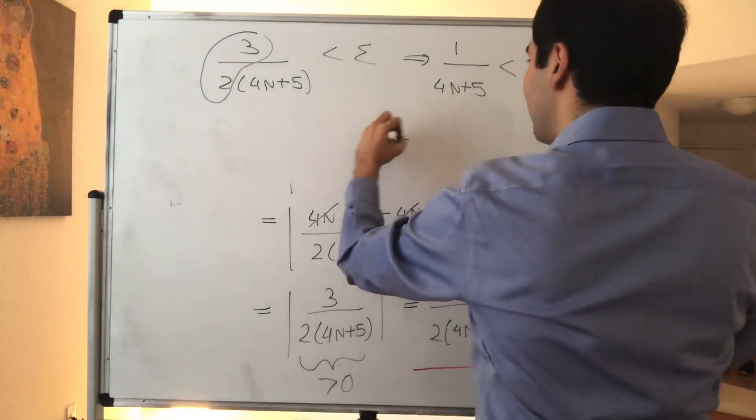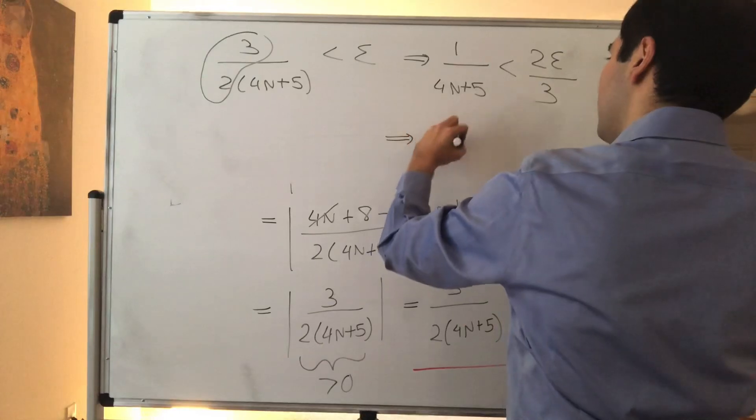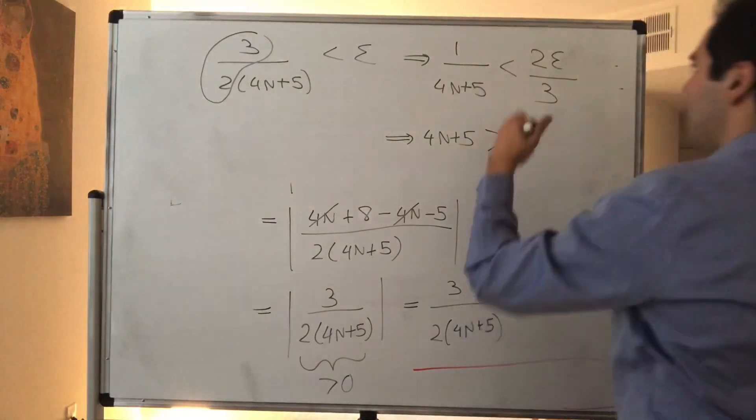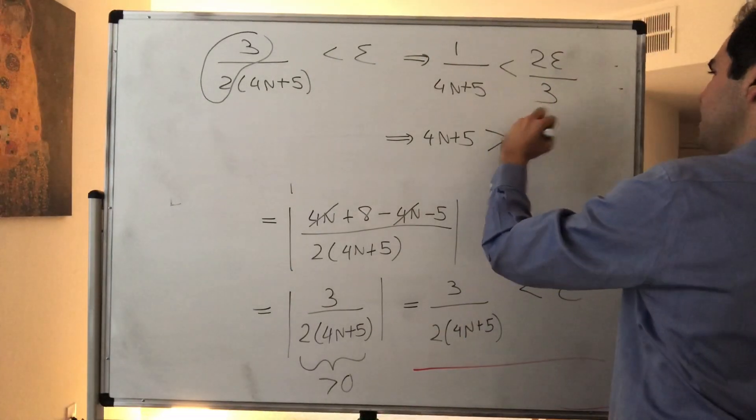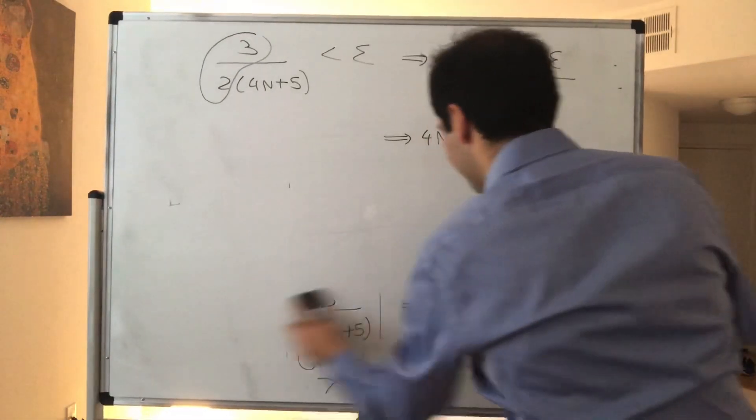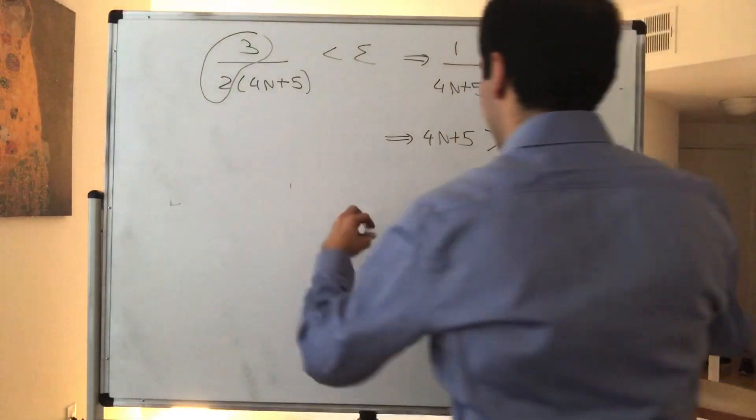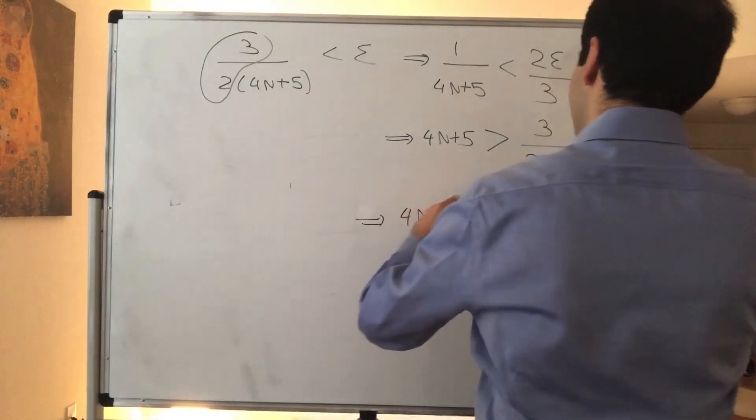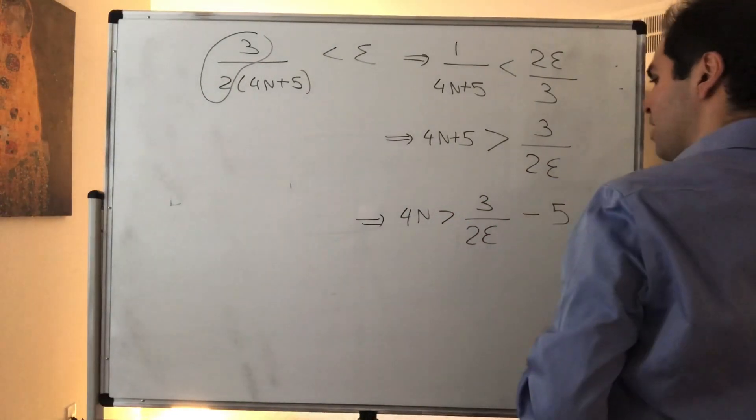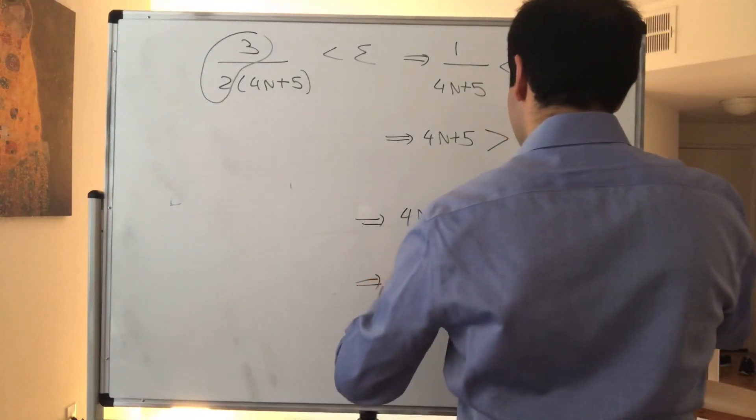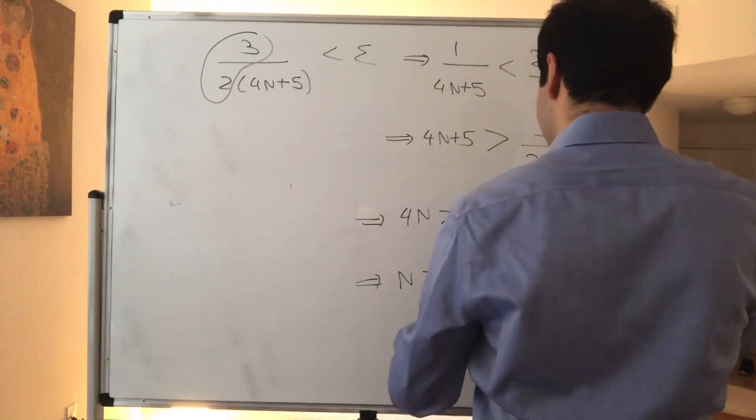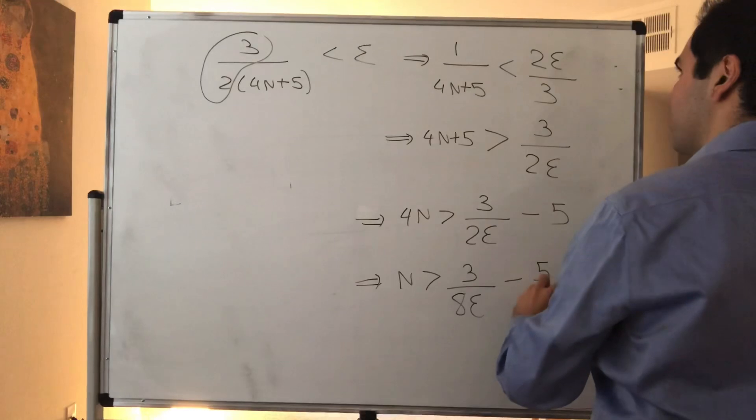And then, you take reciprocals. And remember, when you take reciprocals, you change the sign of the inequality, and that becomes then 3 over 2 epsilon. And then, you just solve for N, so I guess you get 4N is greater than 3 over 2 epsilon minus 5. And in particular, N is greater than 3 over 2 epsilon minus 5 fourths.